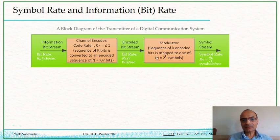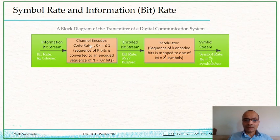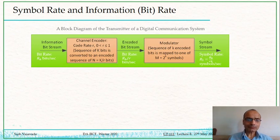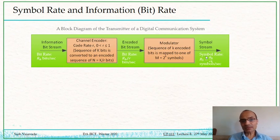Now let us assume modulation is still QPSK, so k is still 2, but we increase the channel encoder capability by setting r = 0.25. As r goes down, the overall transmission rate goes up. So if 100 bits come in, the number of symbols going out every second will be 200 symbols per second.